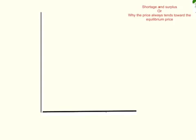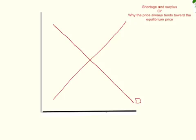Here's a quick illustration of why the price in a free market always tends toward the equilibrium price. Imagine for a moment that you are a store owner and you sell shoes. You've got shoes on a shelf, and the demand for your shoes is represented by this demand curve, labeled D. The supply for your shoes is represented by the supply curve, labeled S. Price is always on the y-axis, quantity always on the x-axis.